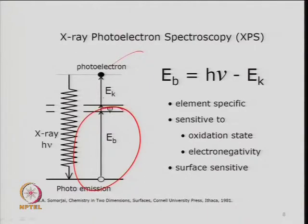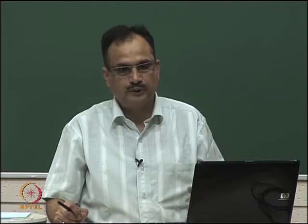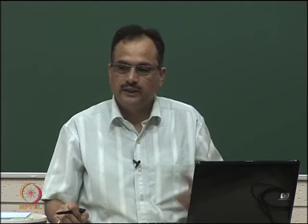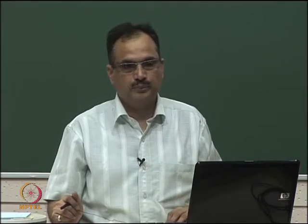The emitted electron can also be a secondary or back-scattered electron — this is called Auger electron spectroscopy (AES). These are electrons with lower energy because they have not come directly from the core but have transferred their energy through subsequent collisions. The same fundamental principle is used for Auger electron spectroscopy: the energy of these secondary (Auger) electrons is also related to the property of the metal.